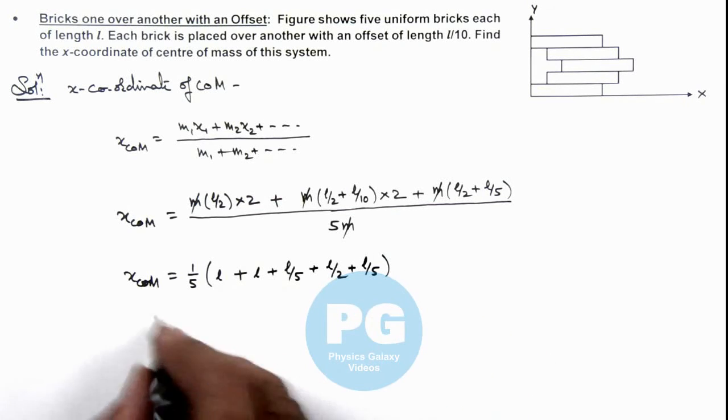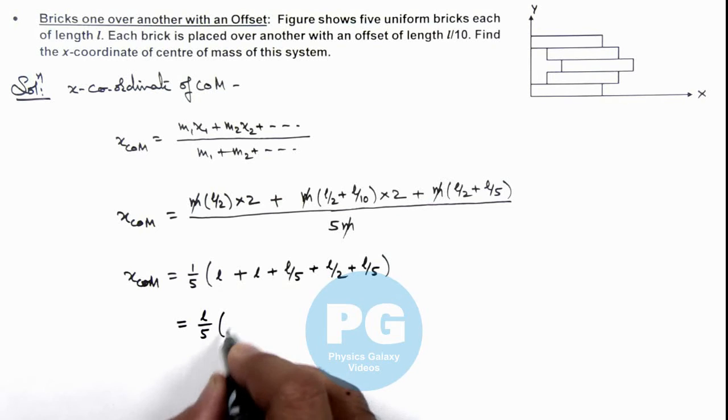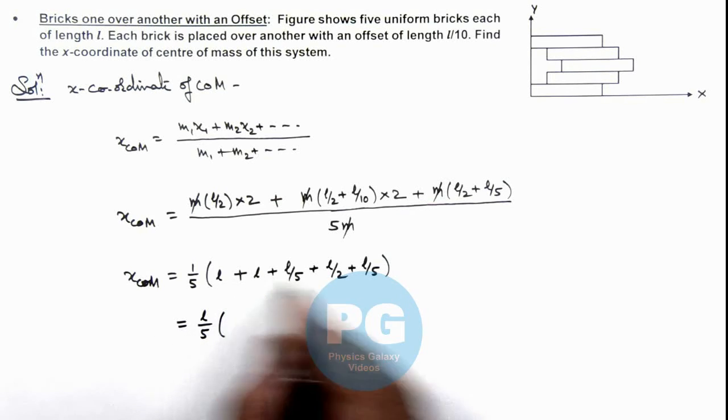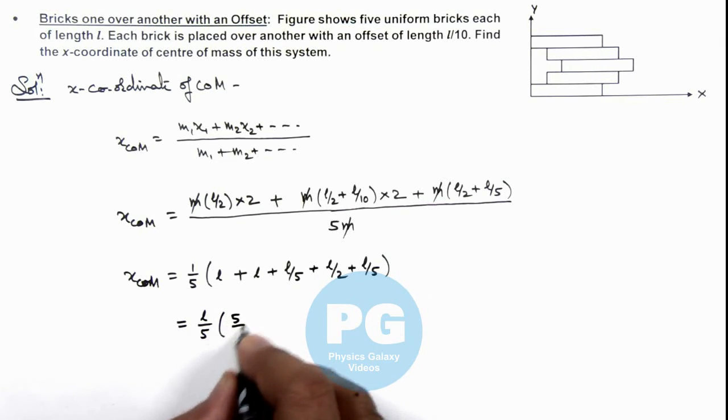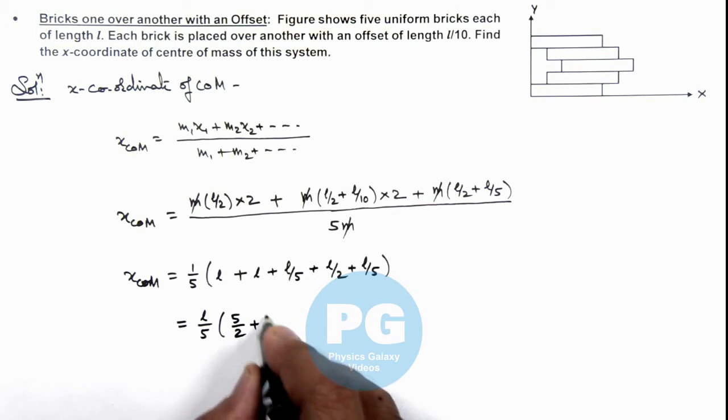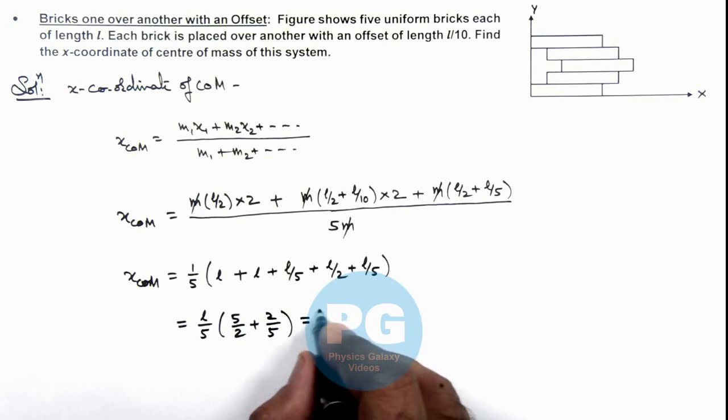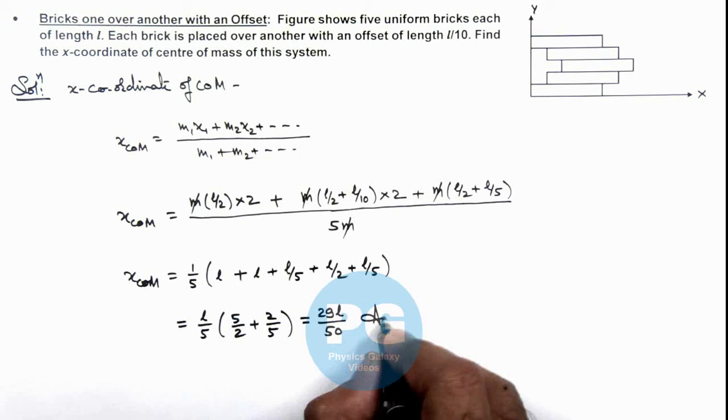On simplifying we are getting the value as l by 5 multiplied by: this l plus l plus l by 2 is 5 by 2, plus 1 by 5, 1 by 5 plus 1 by 5 is 2 by 5. And on simplifying we are getting the value as 29 l by 50. That will be the result of this problem.